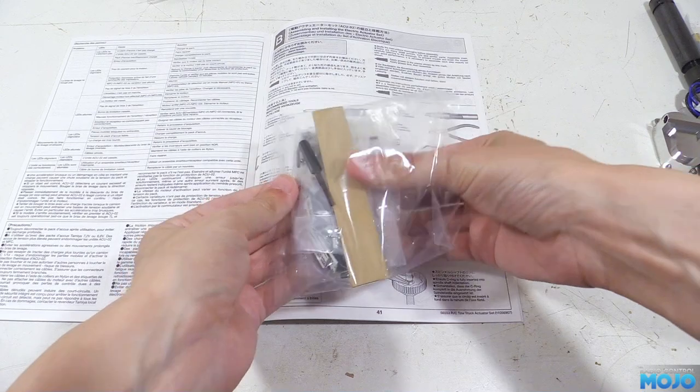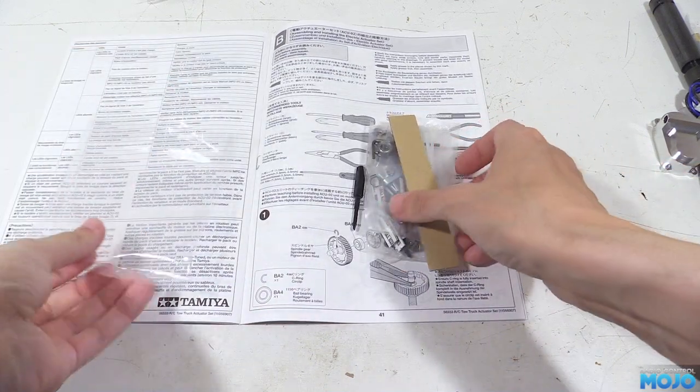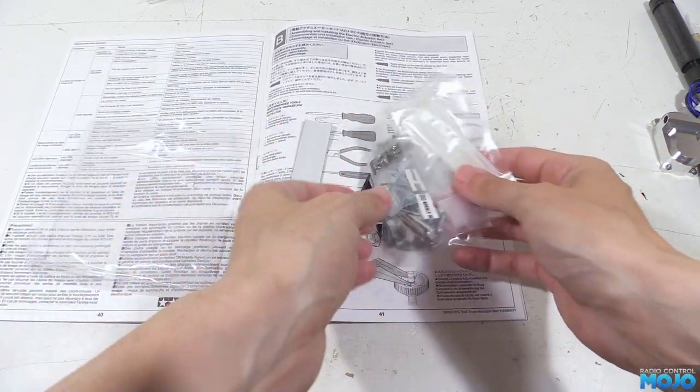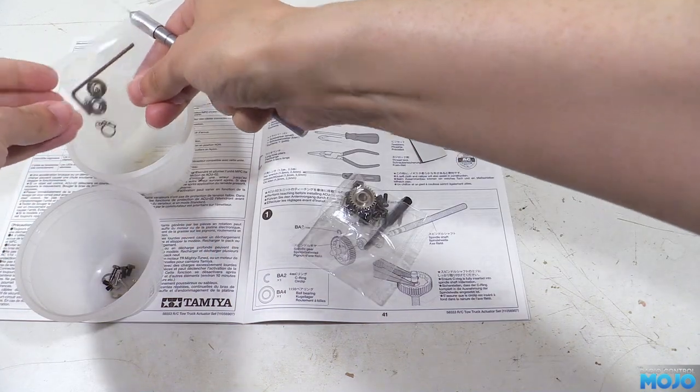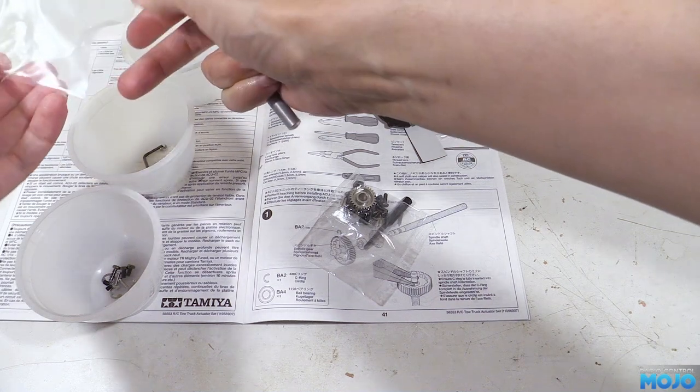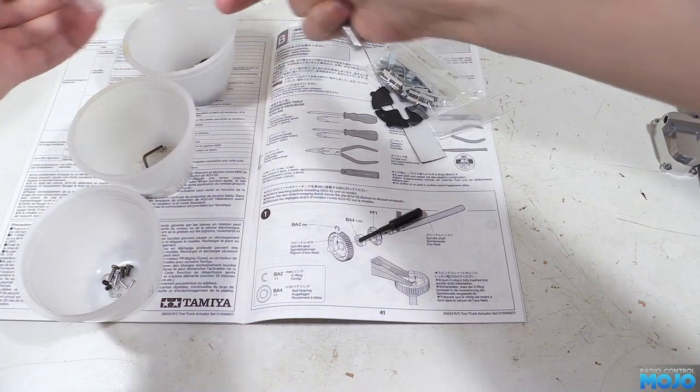Before we get started, we're going to need to open up the bag with the screws in and empty out the small bags into some pudding pots. There's lots of very small parts in there, some steel balls and small clips, so be careful. Alright, here we go then.